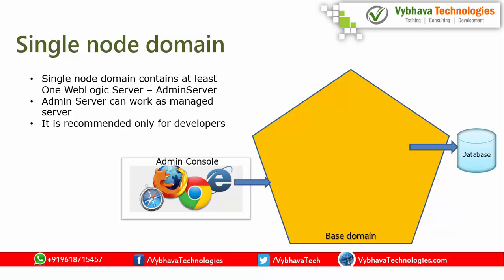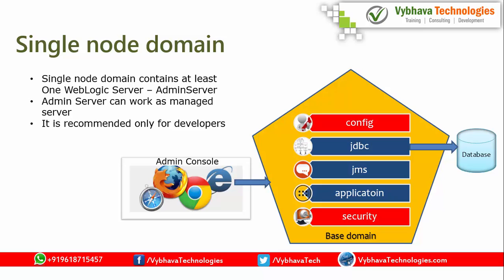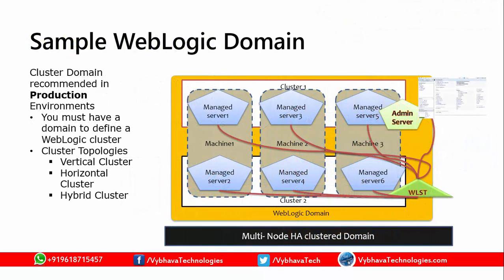For a single-node domain you can install WebLogic using different options: you can use config.sh, or you can use WLST, or you can use pack on one domain and unpack in another to create a new domain. These are the different options to deploy a new domain for a development environment or single-node domain. Within the domain you are going to have configuration, JDBC, JMS, applications, and security. You can also deploy a WebLogic domain distributed across multiple machines, with clusters providing high availability.